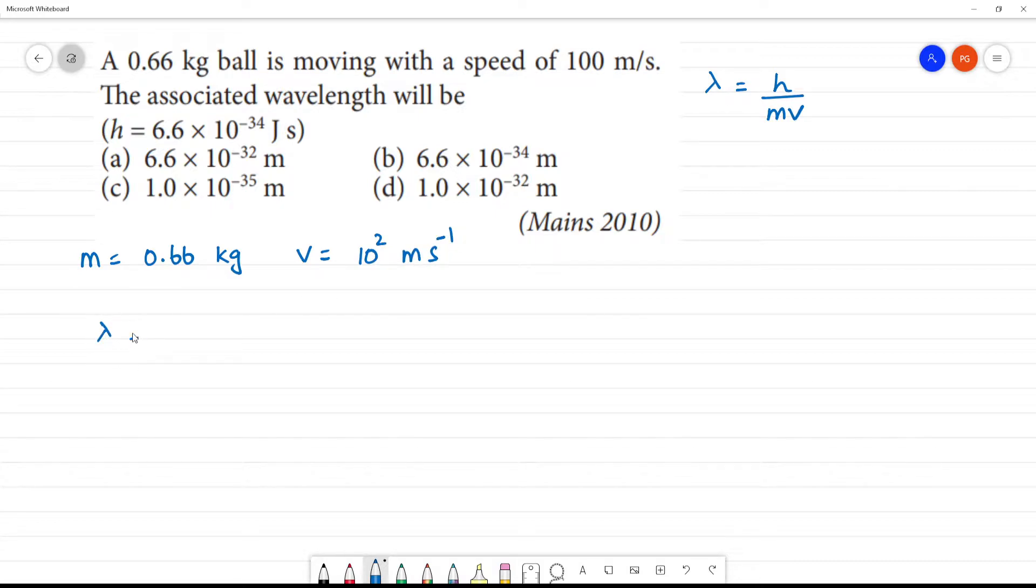Lambda is equal to h, 6.6 into 10 to the power minus 34 joule second, by m value 0.66 kg, and v value 10 square meter second inverse.